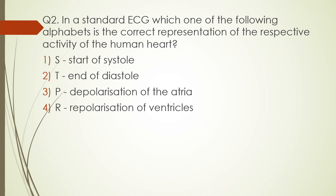Question number two. In a standard ECG, which one of the following alphabets is the correct representation of the respective activity of the heart? Option one: S - start of systole. Option two: T - end of diastole. Option three: P - depolarization of atria. Option four: R - repolarization of ventricle.